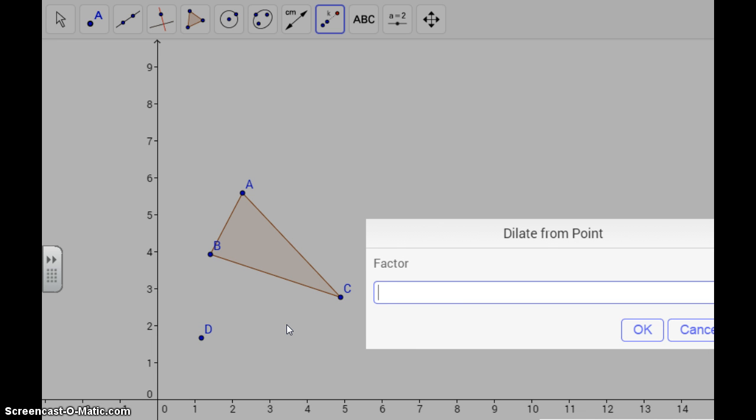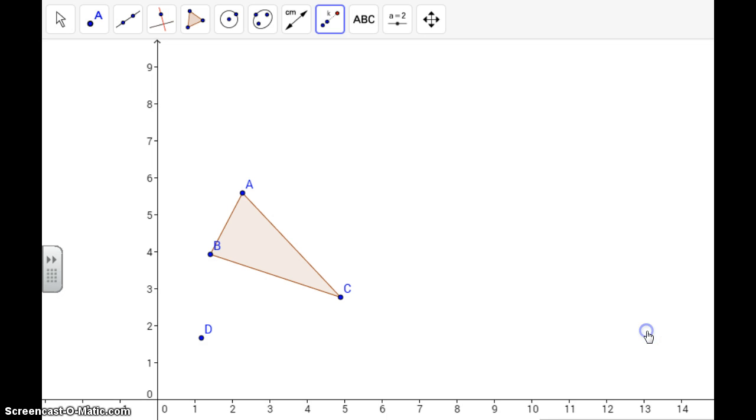So this little screen is going to pop up. It's going to be your scale factor. I'm going to choose my scale factor to be 2. And okay. All right, and notice that this is my image that has been dilated by a scale factor of 2.